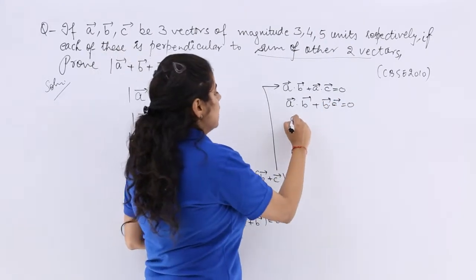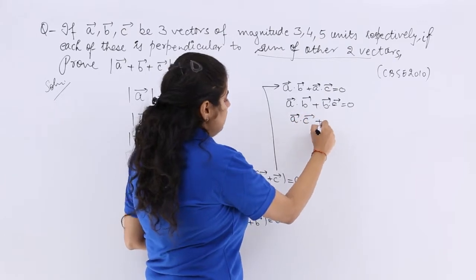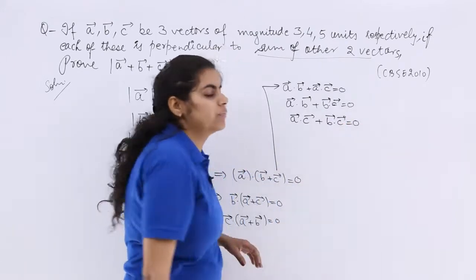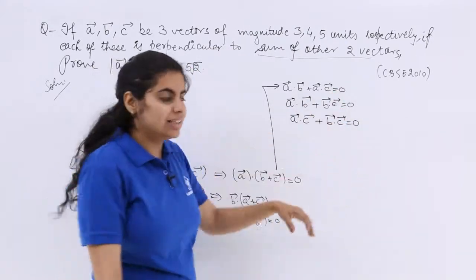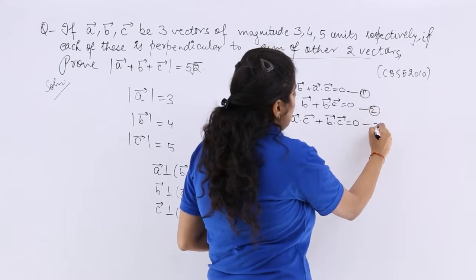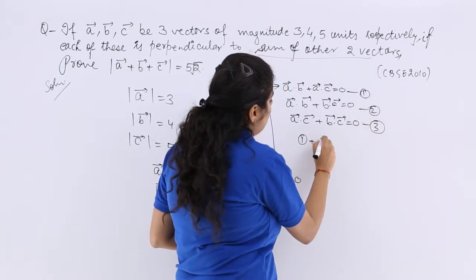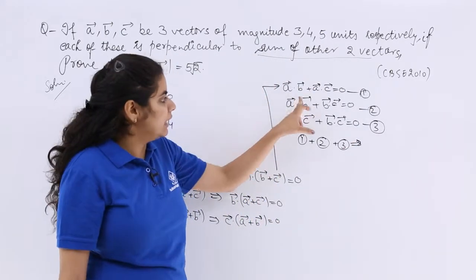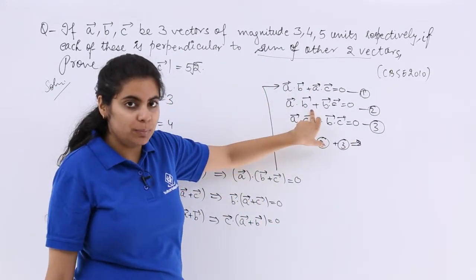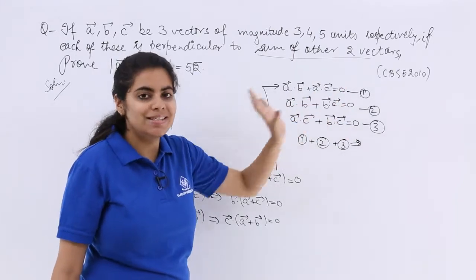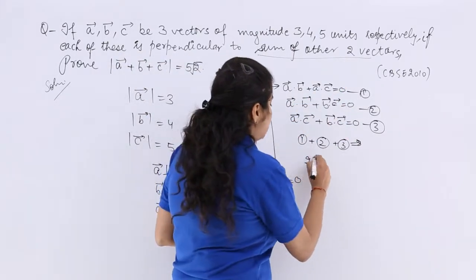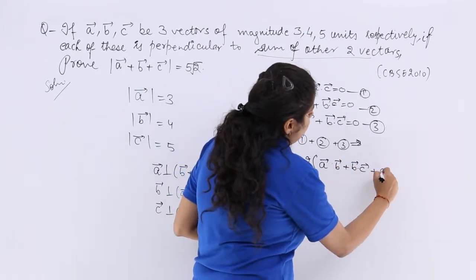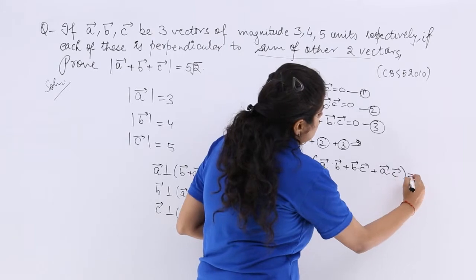So if these are the 3 equations that I can name, and if I am thinking of adding these 3 equations, what do I get? Definitely there are twice times A dot B vector, twice times B dot C, and twice times A dot C. So 2 times of A dot B plus B dot C plus A dot C is equal to 0.